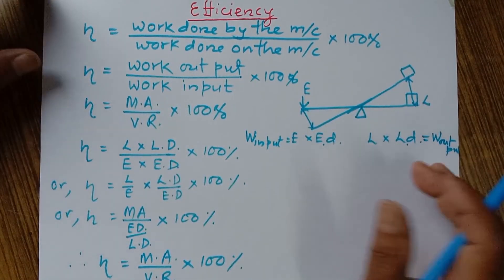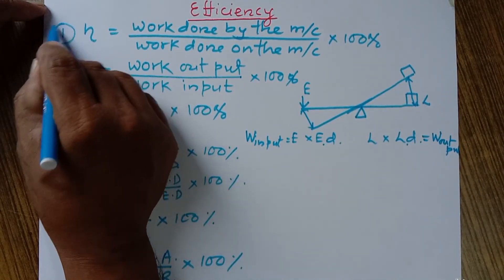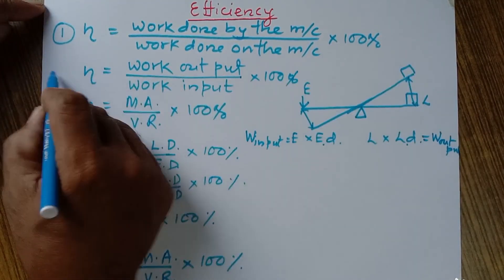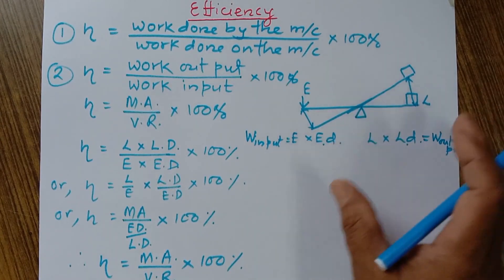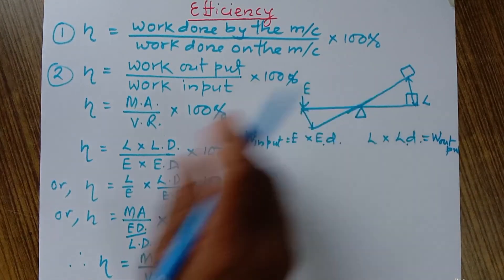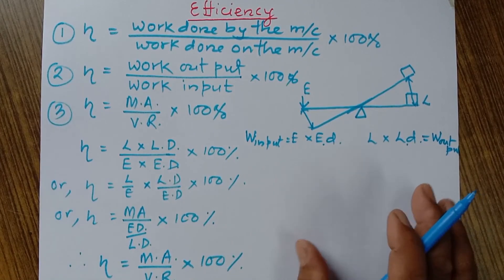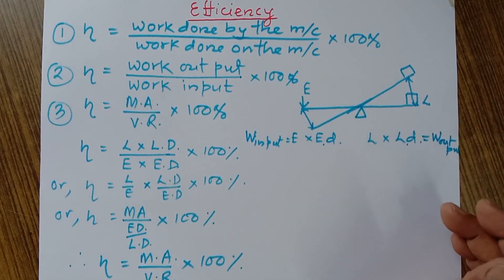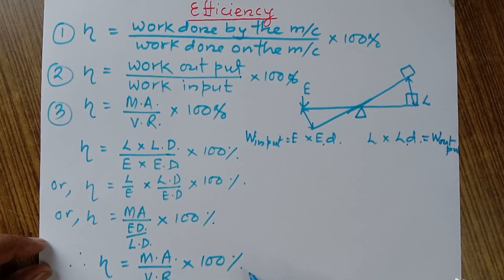That's why we can define efficiency in three different ways. Number one: it is the ratio of work done by the machine to the work done on the machine, expressed in percentage. Number two: it is the ratio of work output to the work input, expressed in percentage. Number three: it is the ratio of mechanical advantage to the velocity ratio, expressed in percentage. This way we can understand efficiency very clearly.